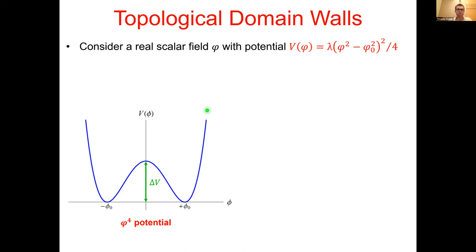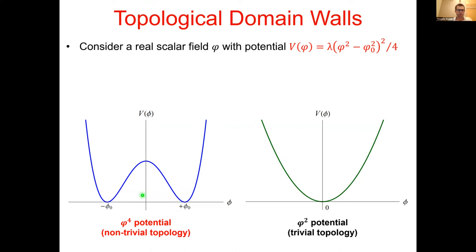The simplest type of dark object we can have is a topological domain wall. The simplest model consists of a single real scalar field phi with a single degree of freedom. There is a self-potential which is quartic, and the shape of this potential has two energetically equivalent minima separated by a potential barrier. These two minima are energetically equivalent but topologically distinguishable because the sign of the scalar field is different at each minimum.